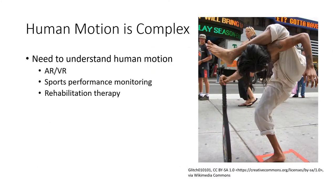Human motion is also very complex. We need to understand it for many applications — for example, putting people in virtual reality spaces requires an understanding of pose in real time, which is still a poorly understood problem. It also matters in understanding athlete performance, and in medicine — for example in rehabilitation therapy, understanding how joint movement evolves as therapy progresses. All these needs require sensing complex human motion.